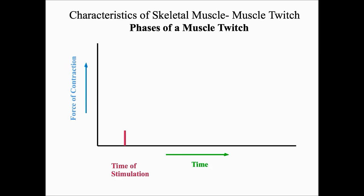A muscle contraction is recorded on a graph called a myogram. On a myogram, the y-axis shows the force of contraction and the x-axis shows time or duration. When we look at a muscle twitch, the first phase — between the time of stimulation and the contraction — is called the lag phase or latent phase.